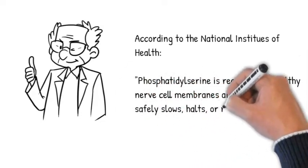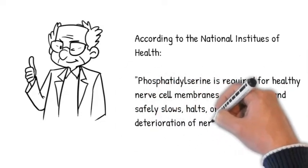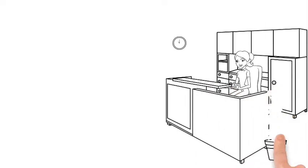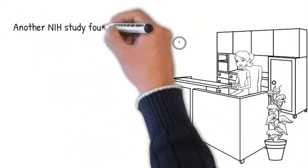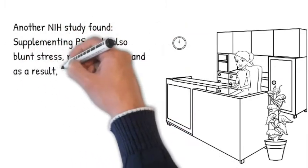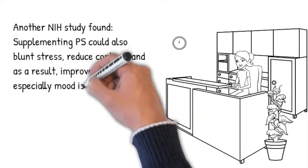It safely slows, halts, or even reverses the deterioration of nerve cells, all aiding memory. Another NIH study found that phosphatidylserine could also blunt stress and reduce cortisol, improving mood issues, especially those compounded by stress. But hey, we don't know anybody that suffers from stress, right?